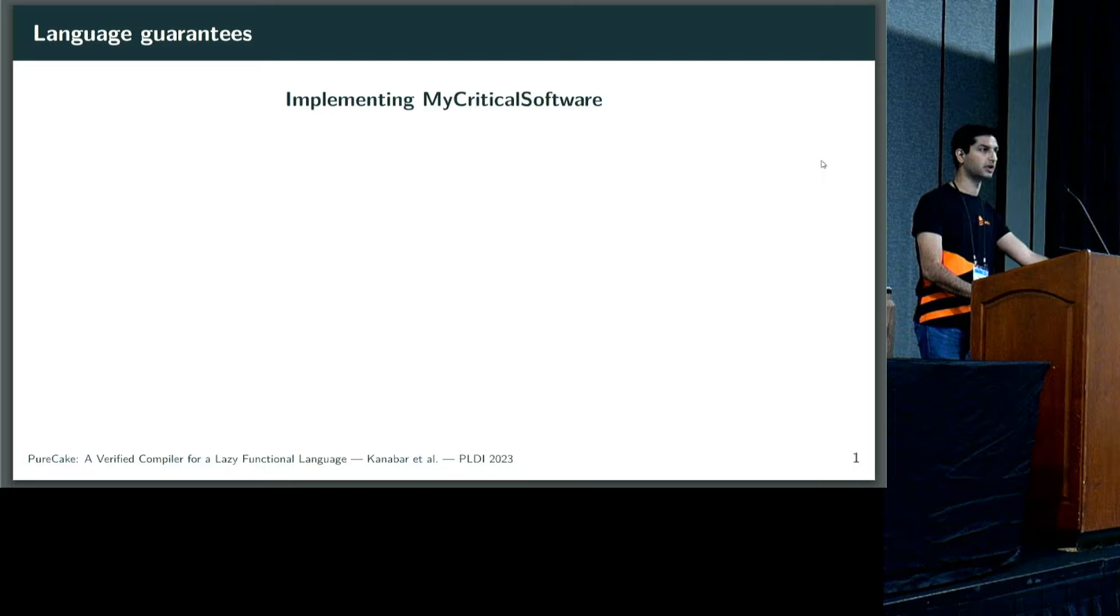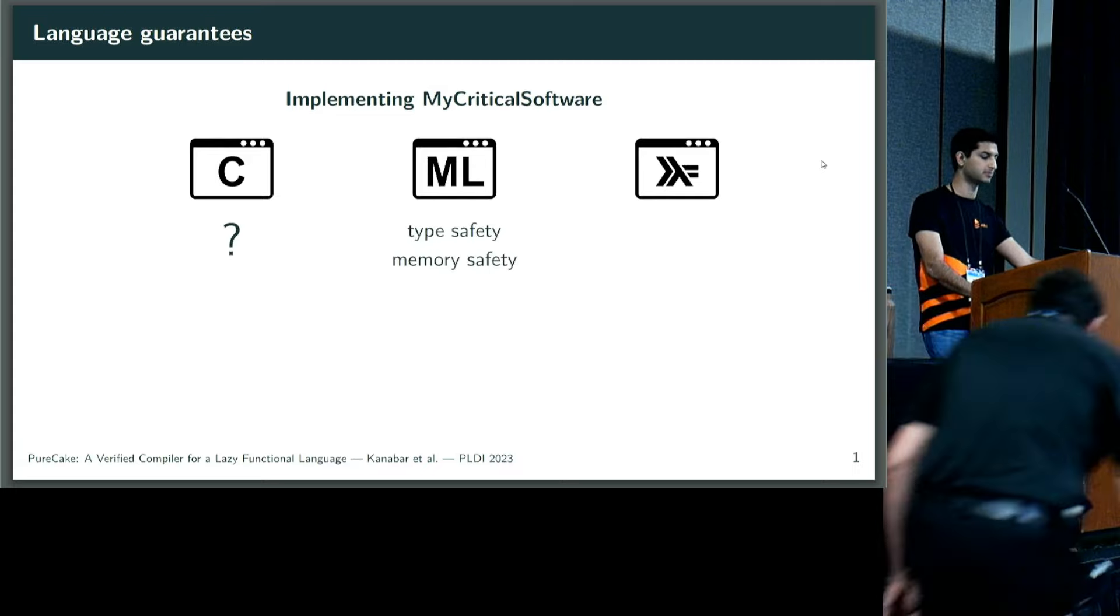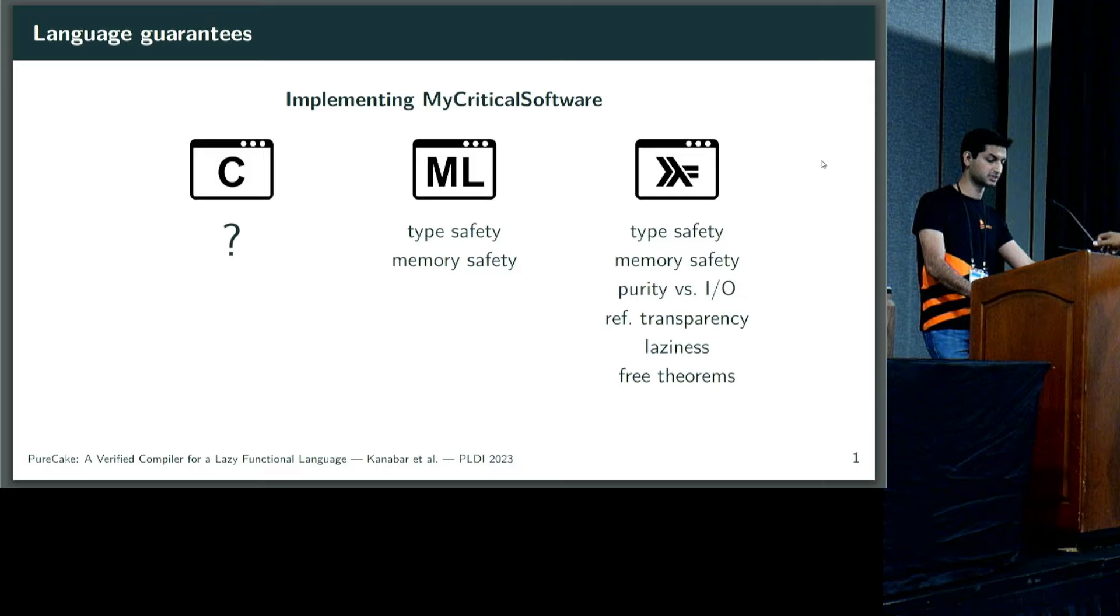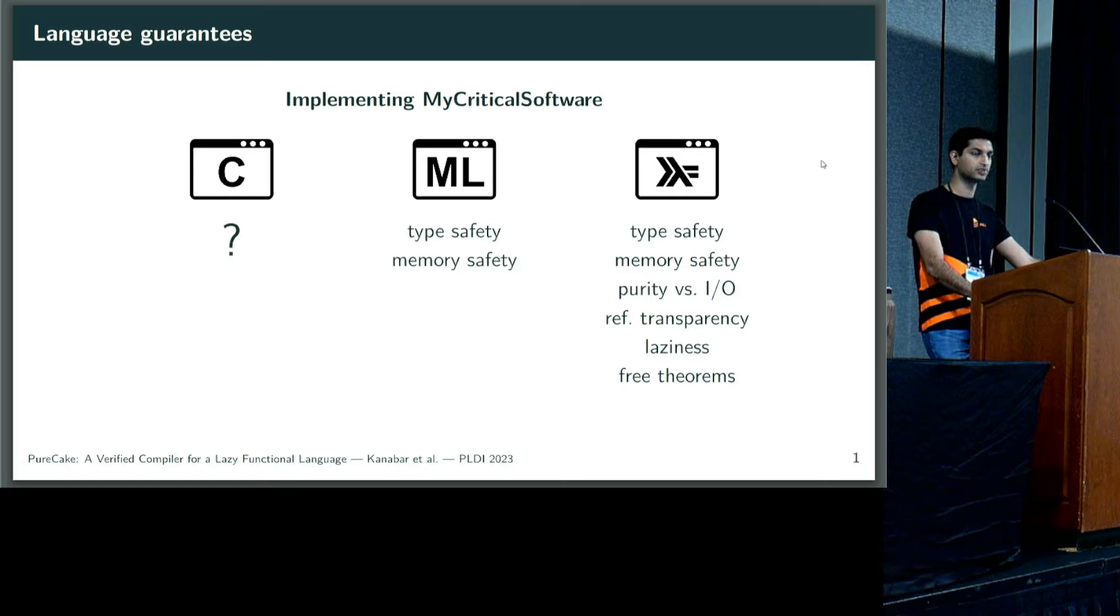I'll be speaking to you today about PureCake, which is a verified compiler for a lazy functional language. This is joint work with several others. When we're implementing critical software, we might consider what guarantees our choice of language provides. What properties does it check? How does it aid our reasoning and reduce bugs? Considering, for example, C, ML, and Haskell, we might say that C doesn't give us very many guarantees. It can be non-trivial to avoid undefined behavior in its semantics. ML generally gives us type safety and memory safety from type checking and garbage collection. And Haskell gives us a lot more besides, including clear demarcation of pure and IO computations, referential transparency, laziness, and free theorems.